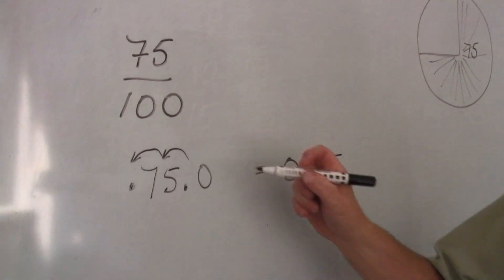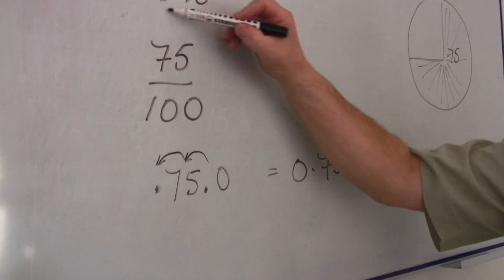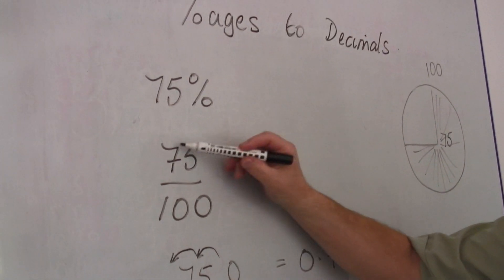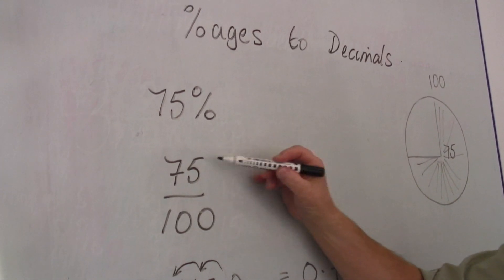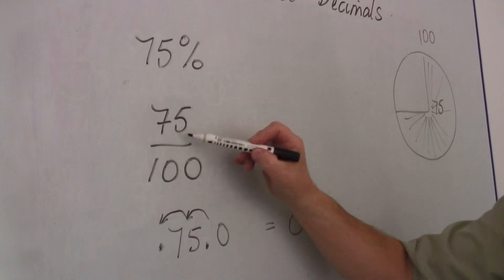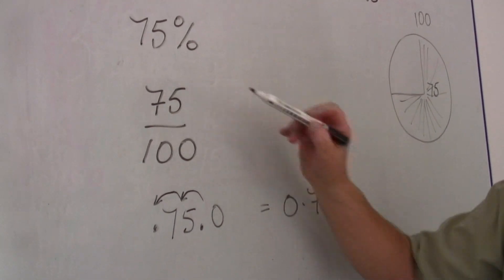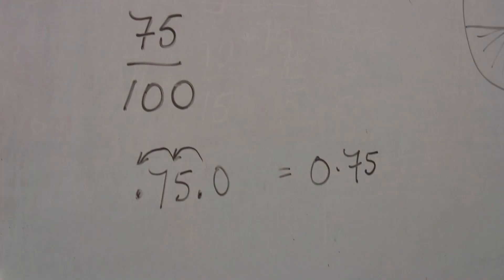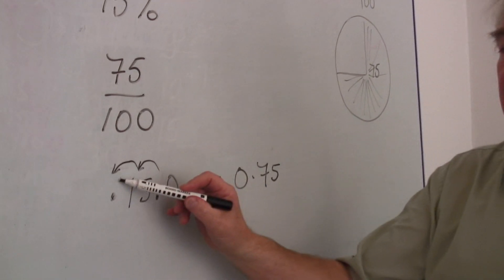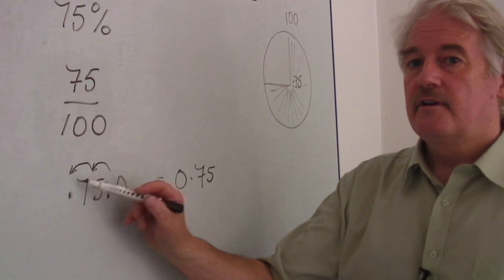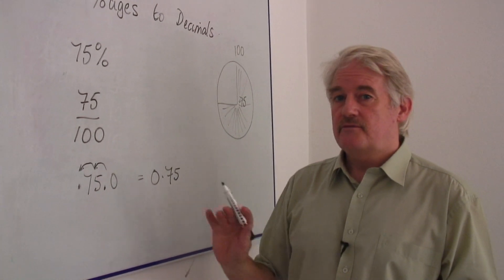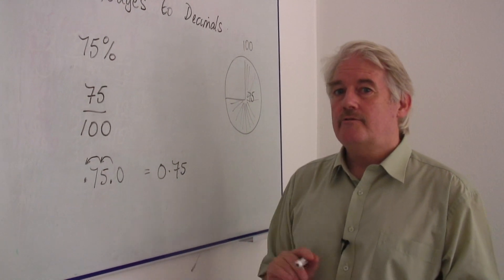Now be careful. A percentage, turn it into a fraction and then use the top of the fraction and divide by the 100 by moving the decimal point two places. It's very simple, if you're careful.